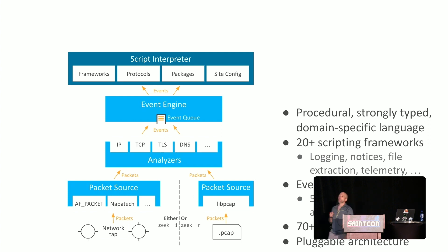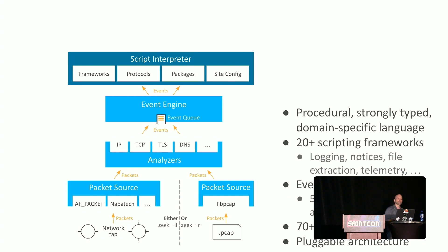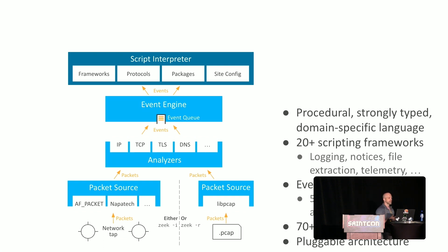Zeek is a procedural, strong-type DSL — domain-specific language. It has over 20 scripting frameworks, covering things like logging, which you're probably familiar with if you've used Zeek, Security Onion, or Malcolm. We also have notices, which are similar to an intrusion detection system. If traffic passes certain thresholds, triggers, or detections, it will throw a notice — but it gives you a lot more information and detail before and after that particular notice.